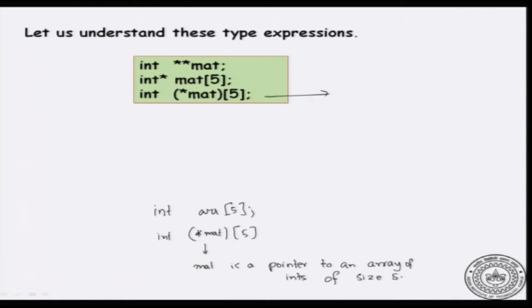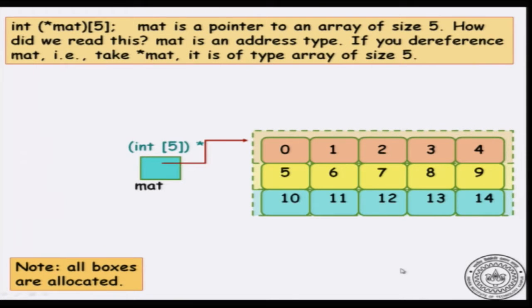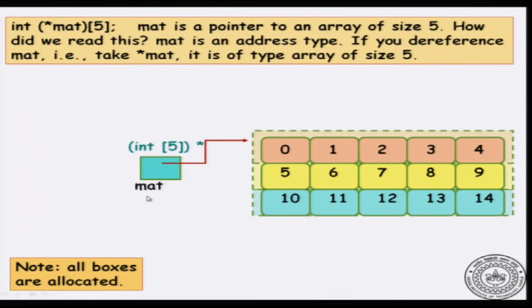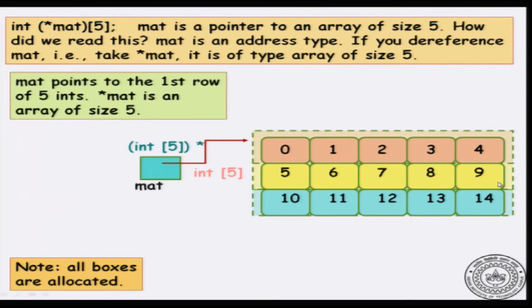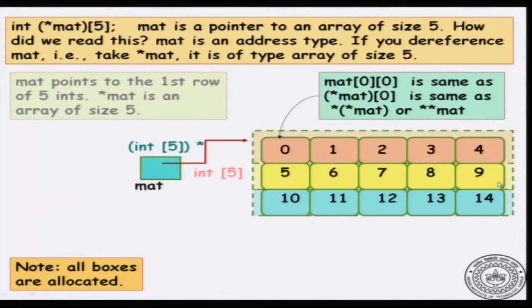We can look at it this way and see what this really means. We can picture it: if you dereference mat — that is, if you take star mat — you will get some array of size 5 of integers. Mat may be pointing to some array of size 5, which means the next subsequent location will be another array of size 5 if it is a valid address. For the first location we can refer to it as mat[0][0], or it is the same as *(mat[0]), or the same as **mat.